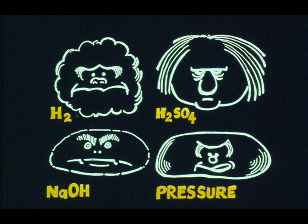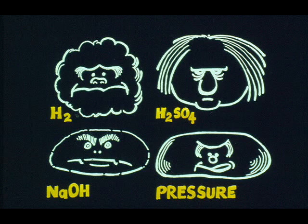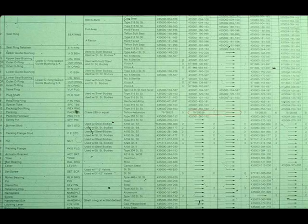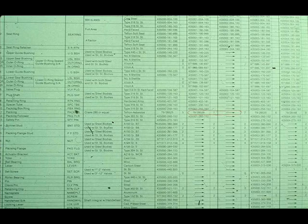When you encounter a special service or packing problem, request assistance from your supervisor, the responsible engineer, or the valve manufacturer's local service representative. Packing and lubricants can be ordered from a valve manufacturer or a supplier. Refer to a parts book for the part number of the packing you need. For example, the part number for 2-inch valve packing is 79-28529.